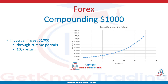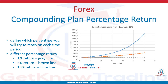The second variable is percentage return in the Forex Compounding Plan. When you have defined the initial investment, it is time to define which percentage you will try to reach on each time period. In the graph, I have put three different percentage returns: 1% return is the grey line, 5% return is the brown line, and 10% return is the blue line. You can see that 10% has exponential growth after 30 time periods.